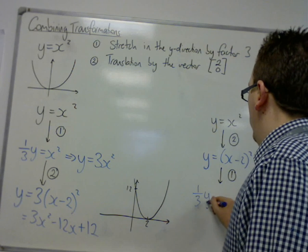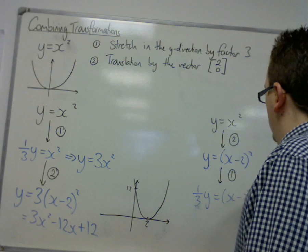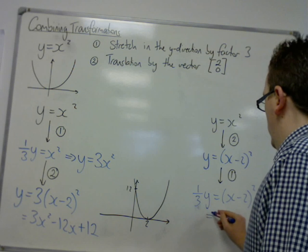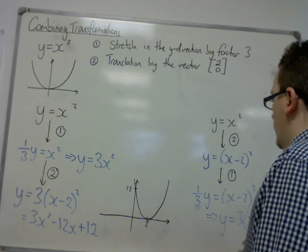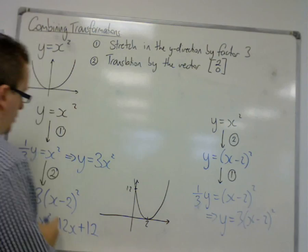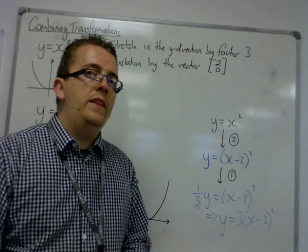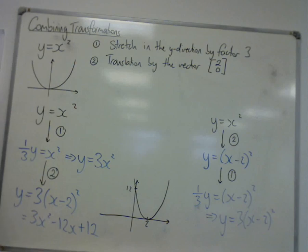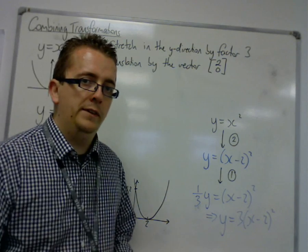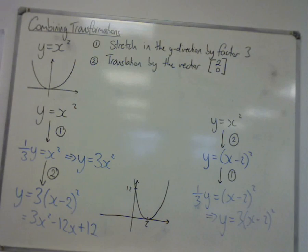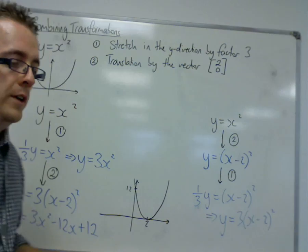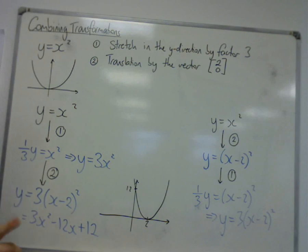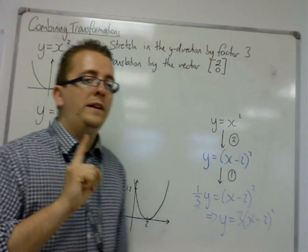So y gets replaced with 1 third y. So y equals 3 lots of (x minus 2) all squared. And we can see that this equation is the same as this one. So in this case, the order of transformation didn't matter. It didn't matter which one we did first. We've got the same answer for both. But the thing is, this isn't always the case.